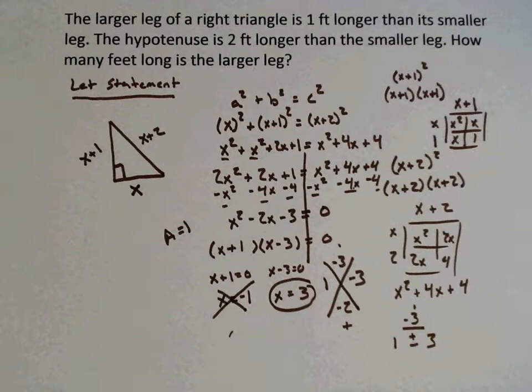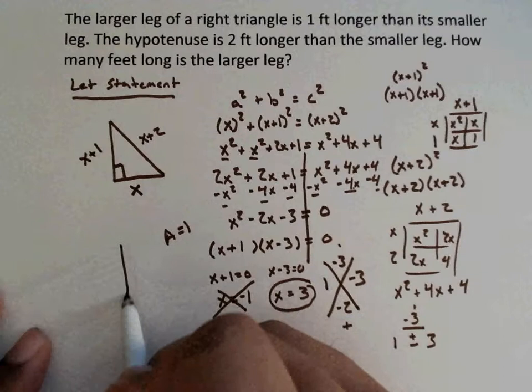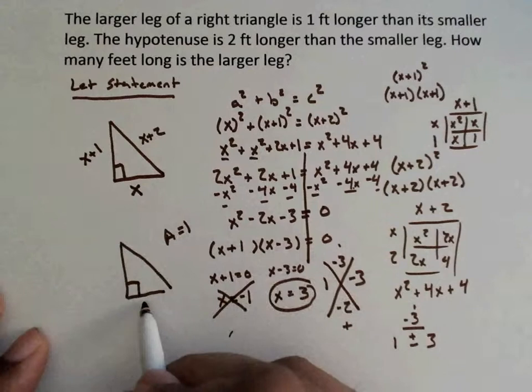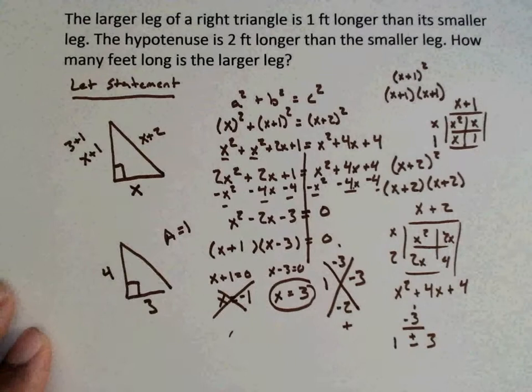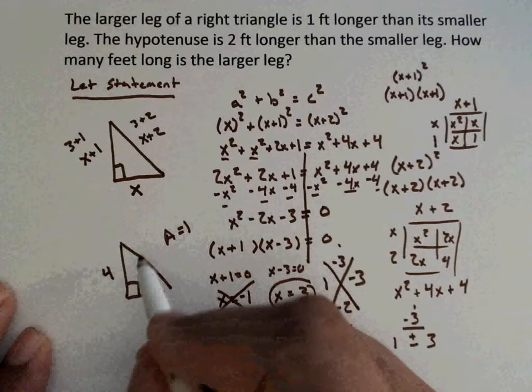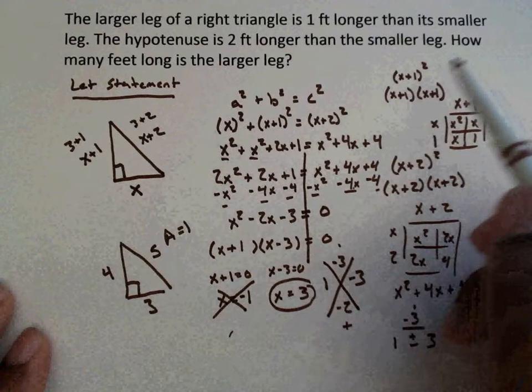So since our answer is 3, we know we're going to draw a new triangle. For our X, we know it is 3. For our X plus 1, we're going to do 3 plus 1, and we know 3 plus 1 is 4. And for our hypotenuse, we're going to do 3 plus 2, which is 5. So now we have all the sides done.